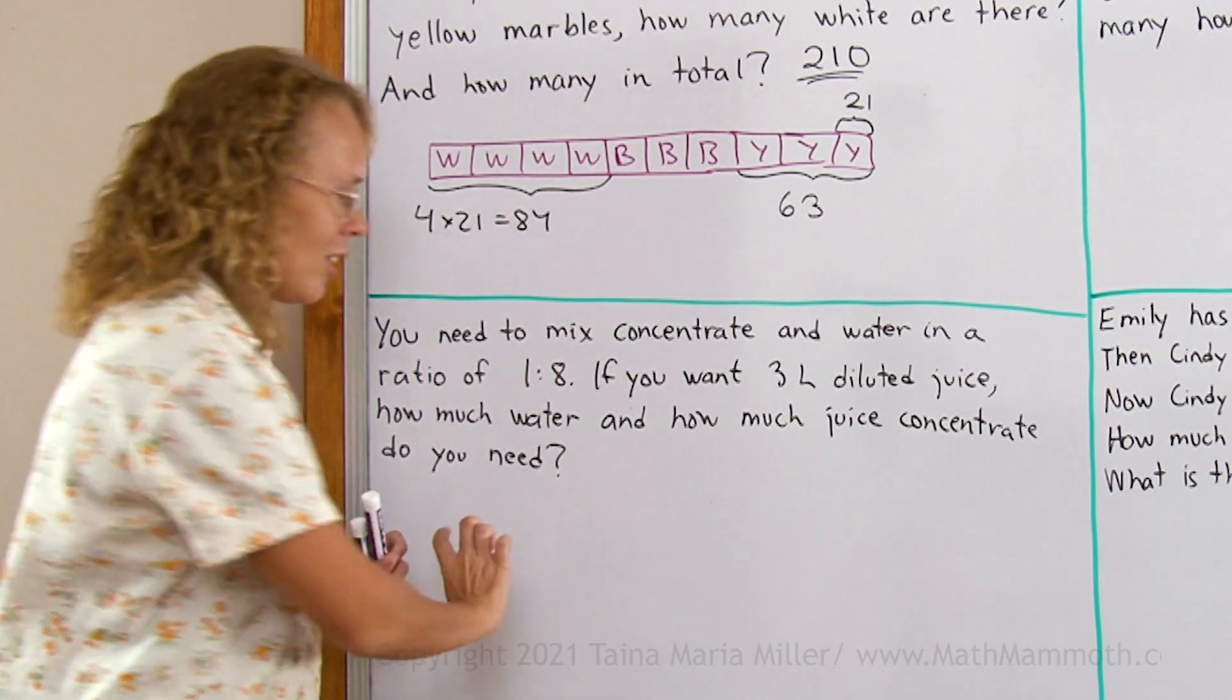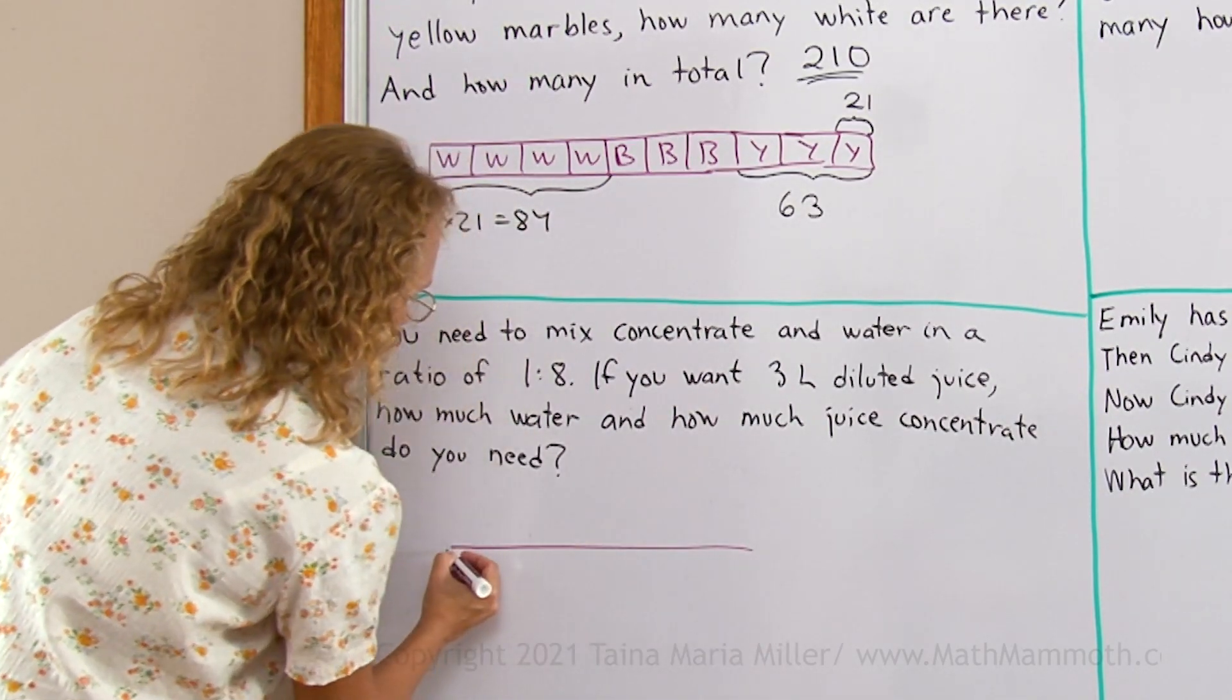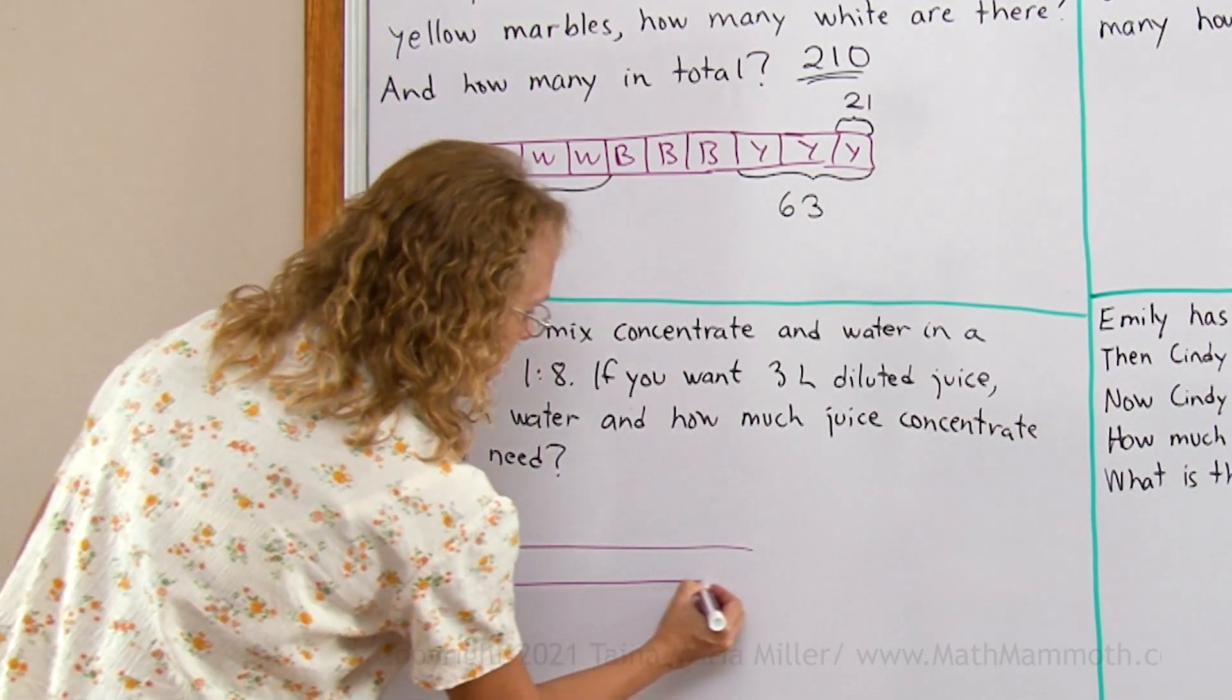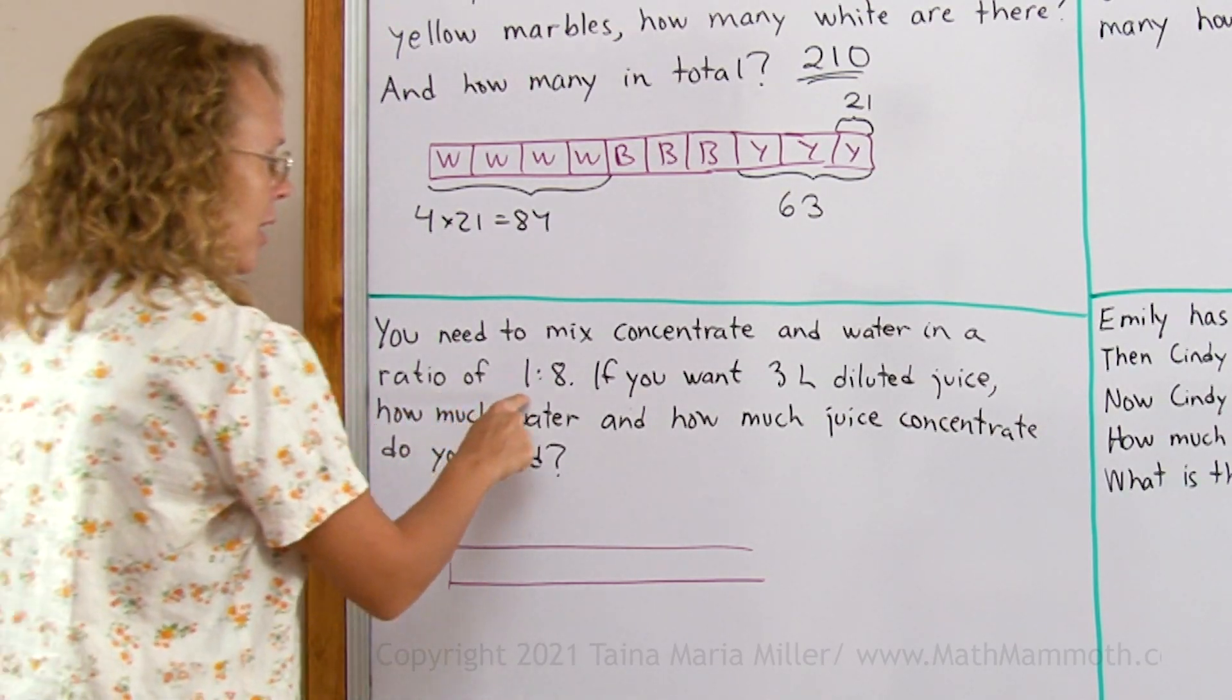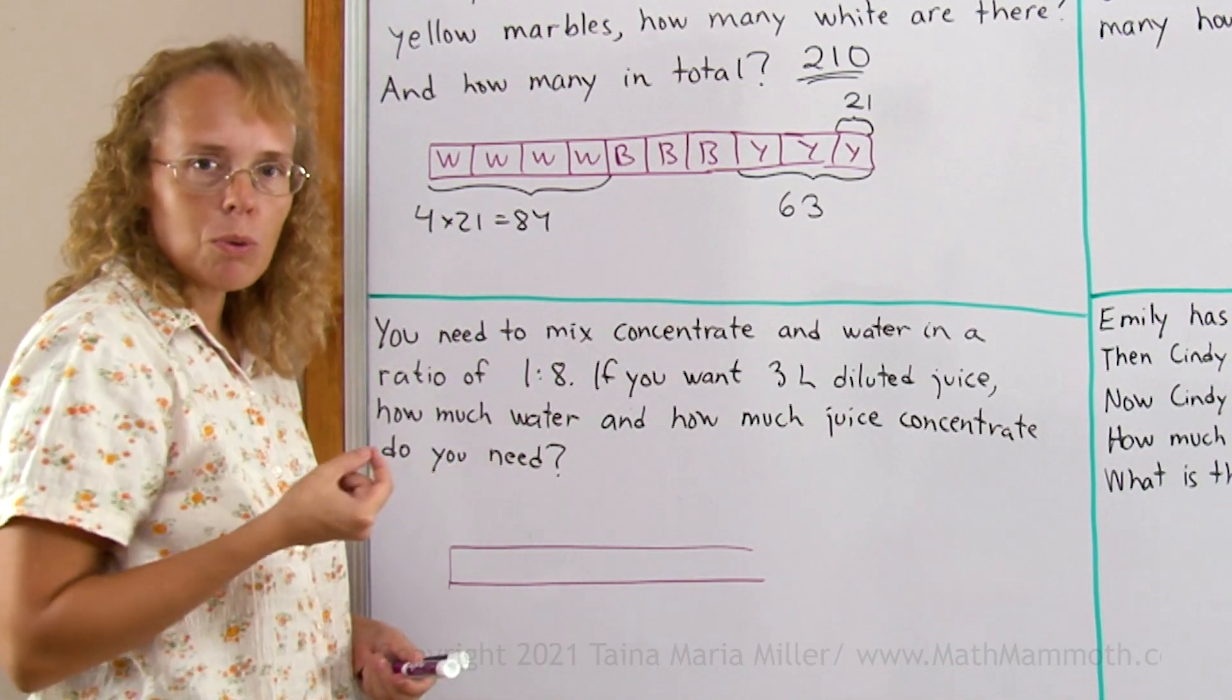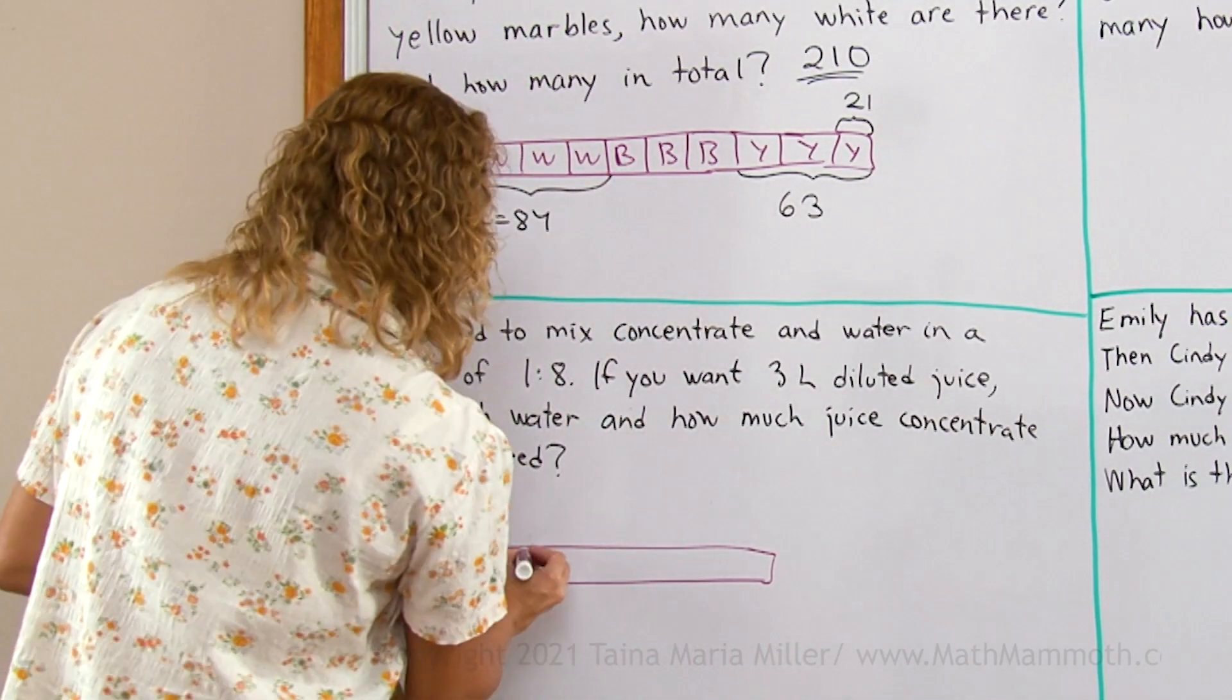I'll again draw a long bar to represent all the juice. This is all of the juice. It's 3 liters, right? And I need to divide it into how many parts. I need to have 1 part for concentrate and 8 parts for water. So that means 9 parts in total, right?